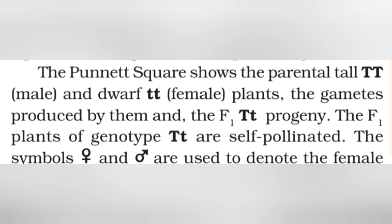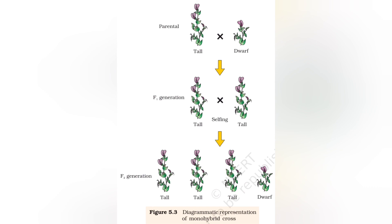What the Punnett square revealed, and the other crosses that Mendel performed, were all put together, and Mendel derived the laws of inheritance that we will continue in the next lecture.